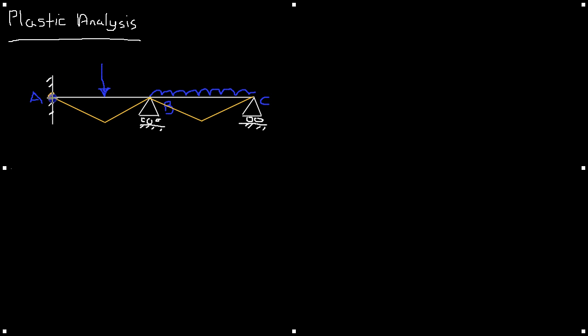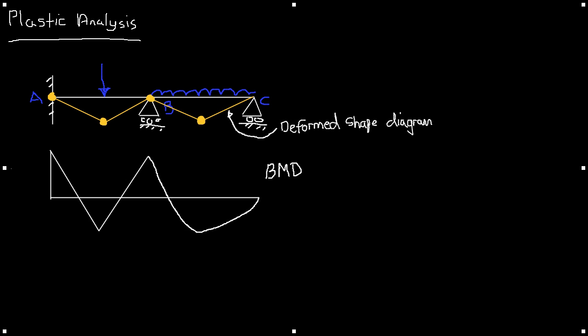If we draw the bending moment diagram we'll see from the peaks how these plastic hinges relate to the peaks of the bending moment diagram. So the important thing to get from this is that plastic hinges occur where the maximum bending moment occurs in a beam.